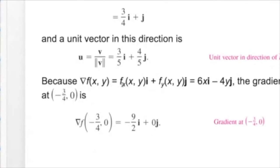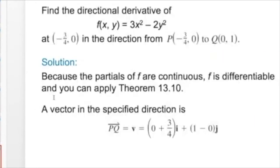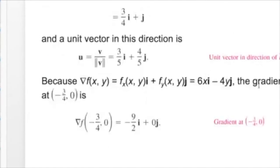Next, we calculate the gradient by taking the partial derivatives. The derivative with respect to x gives 6x·i, and the derivative with respect to y gives −4y·j, so the gradient is ∇f = 6x·i − 4y·j. Substituting the given point (−3/4, 0) into this, the gradient evaluates to −9/2·i.